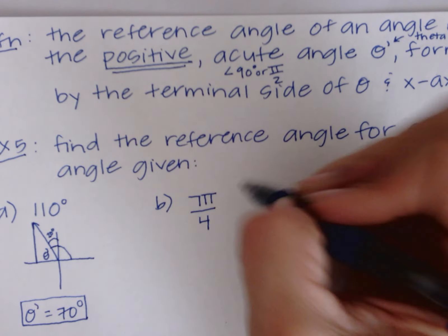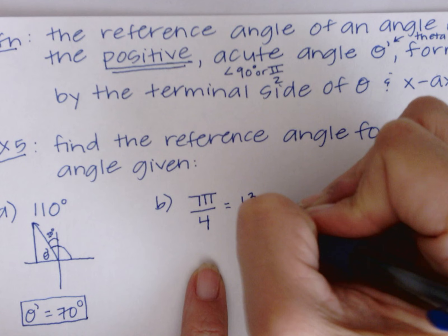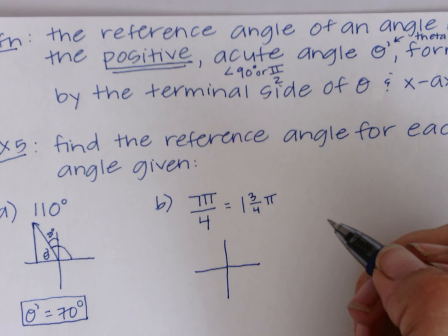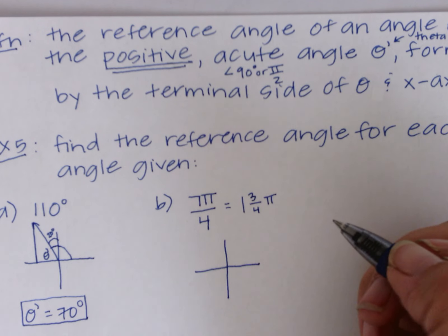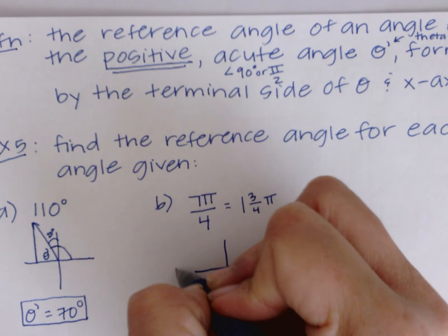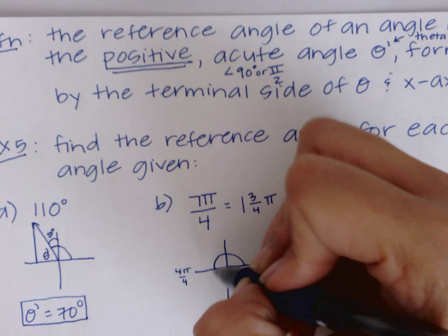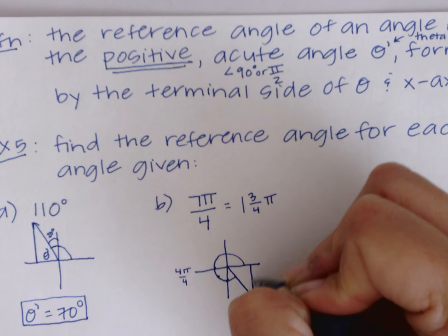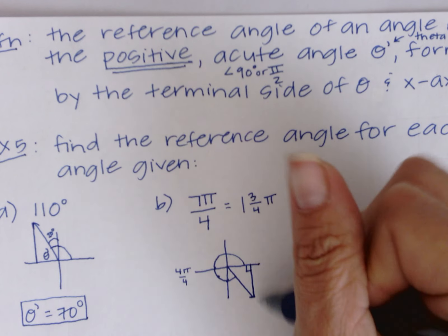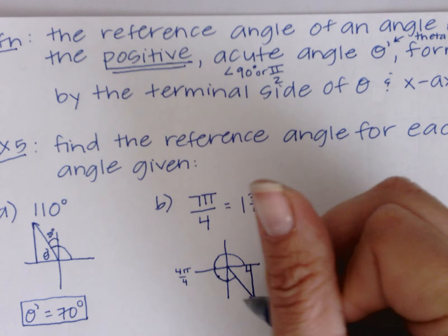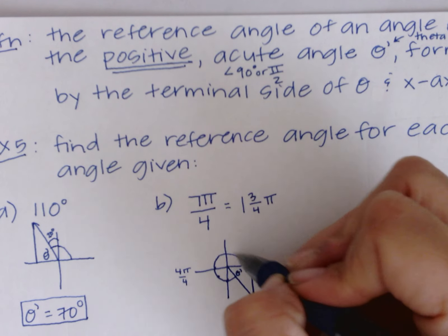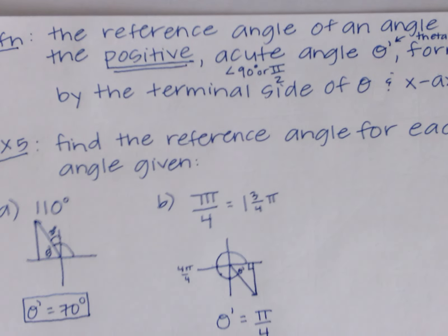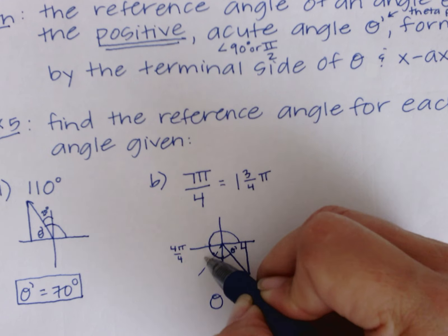Example 5b: find the reference angle for 7π/4. Convert the improper fraction: 7π/4 = 1 and 3/4 of π. This is 4π/4 (= π) plus three more quarter-pieces, landing in the fourth quadrant. Connect the terminal side to the x-axis — the remaining gap is π/4. You can verify: one-fourth, two-fourths, three-fourths... that leaves one fourth, so θ' = π/4.